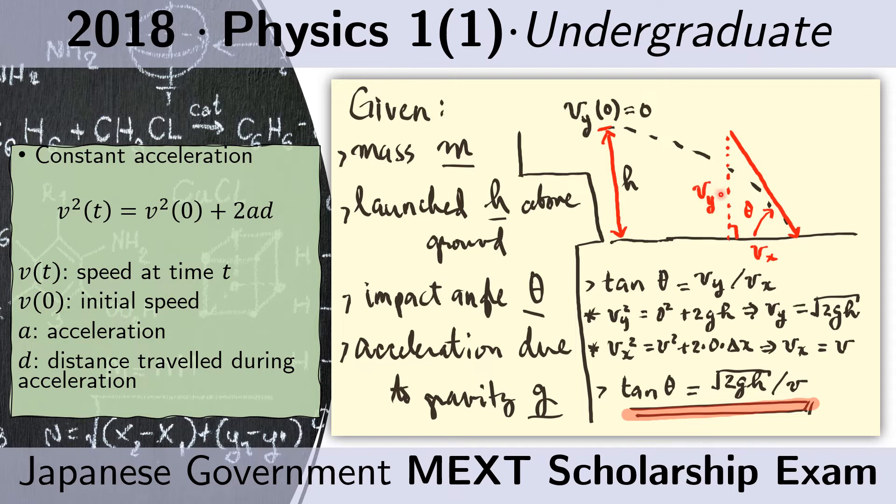And v_y is the speed during impact here, the vertical speed during impact. And we know how to get the vertical speed because this motion has constant acceleration in the y direction.